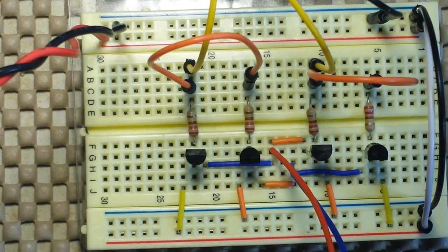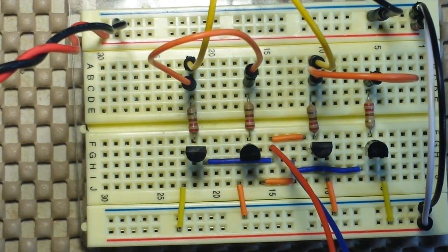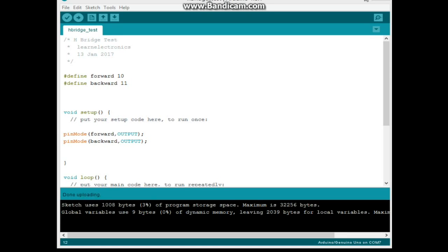All right, let's look at the code. Here is the code for our homebrew H-bridge motor driver. So we're defining our forward as pin 10, our backward as pin 11, then down in the setup we set them each to output.